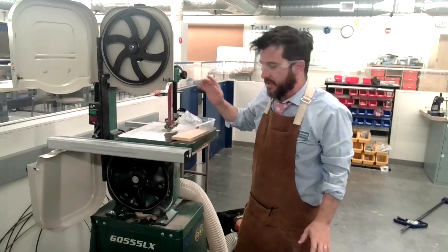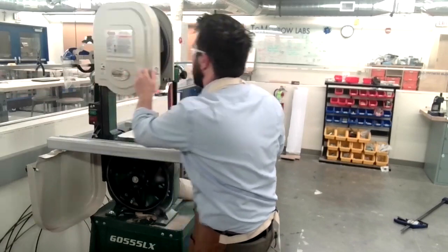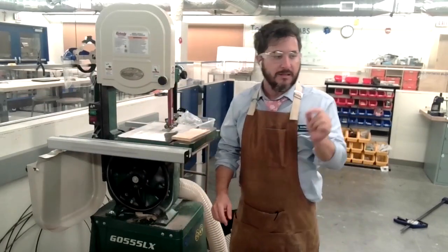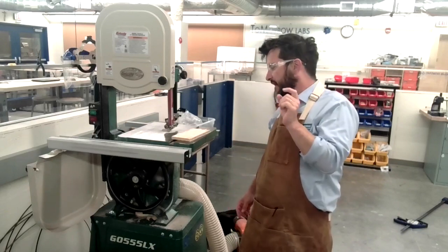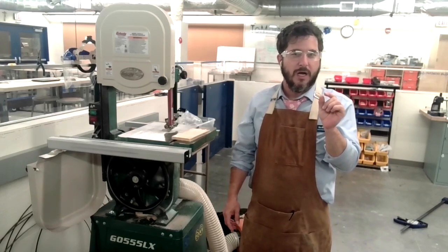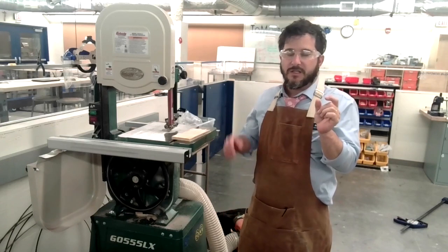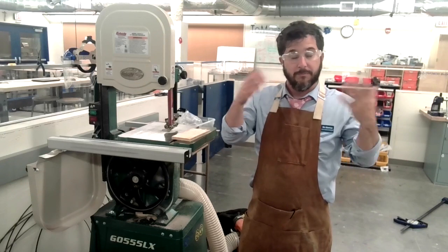The bandsaw blades come in different thicknesses, so anywhere from about a quarter of an inch to up to an inch. Not so much for this one. This one probably the biggest it makes is three quarter inch, but they make bigger bandsaws.